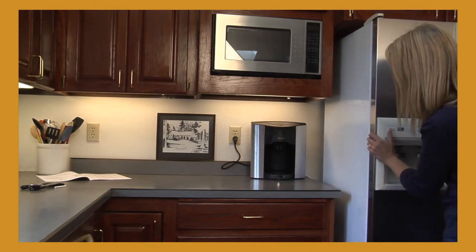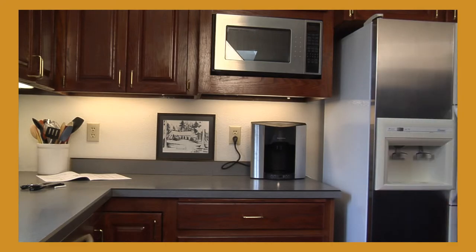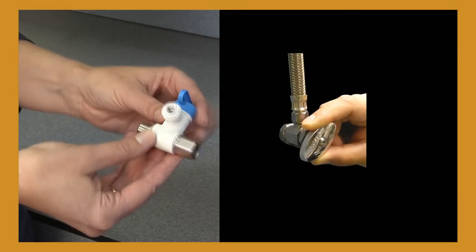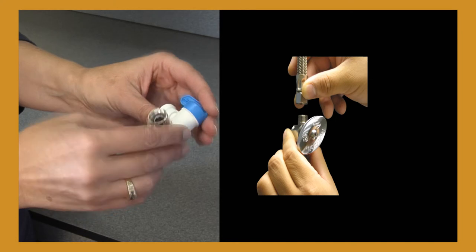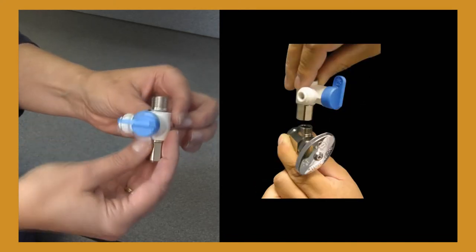Should you wish to locate your BrewExpress somewhere other than next to the refrigerator, then simply turn off the water supply commonly located under the sink, remove the fitting, and add the valve between the two connections.